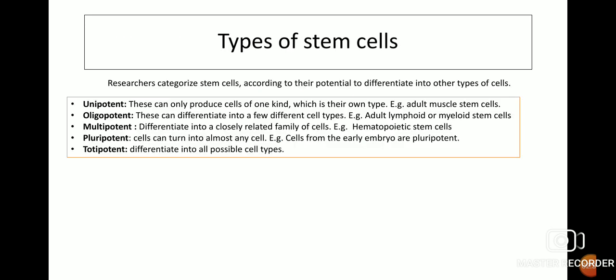Now we will look at types of stem cells. Researchers categorize stem cells according to their potential to differentiate into other types of cells. The categories are: unipotent, oligopotent, multipotent, pluripotent, and totipotent.